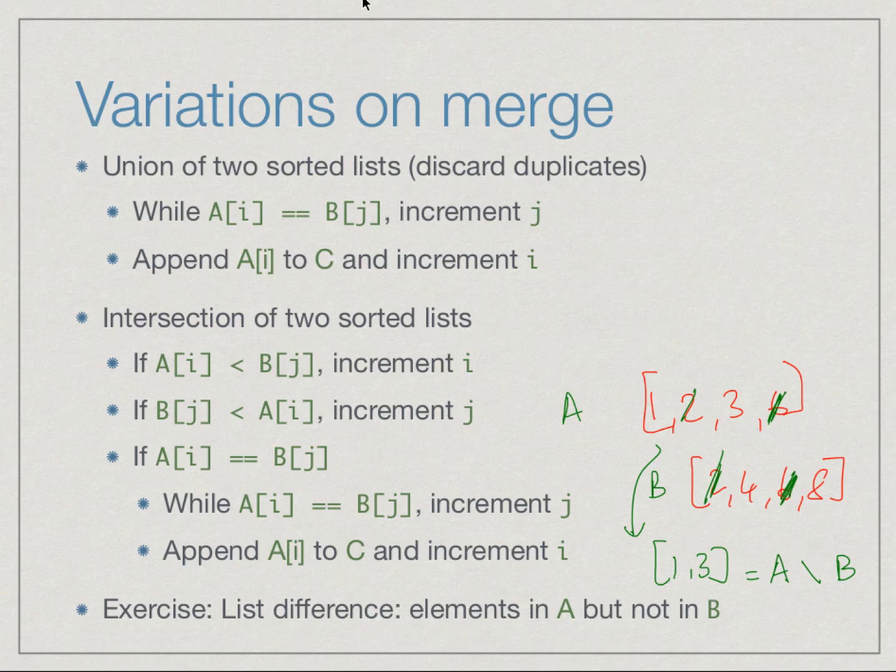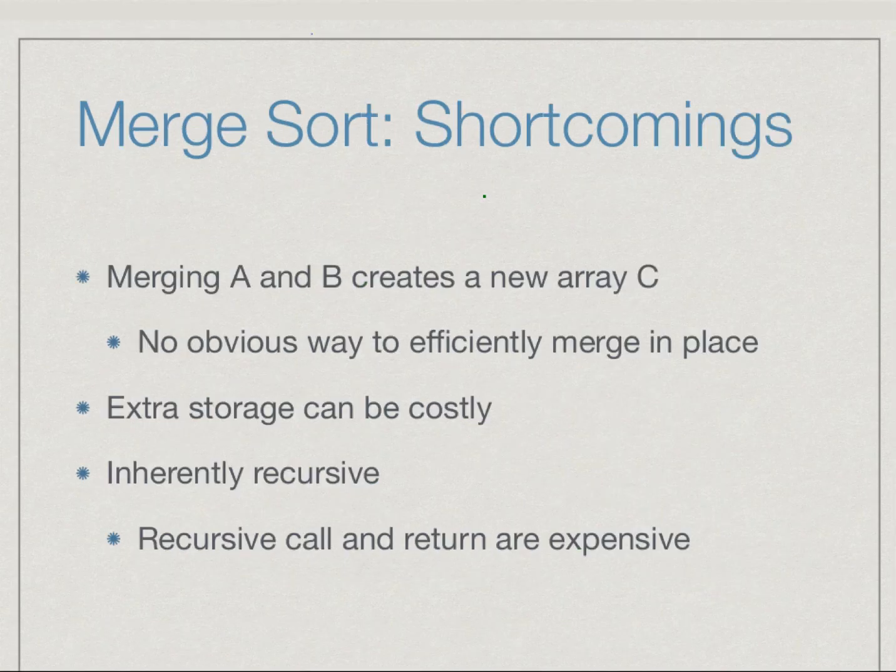See if you can write a version of merge which gives you all the elements in A which are not also in B. Merge sort is clearly superior to insertion sort and selection sort because it is order n log n and can handle lists of size hundred thousand as opposed to a few thousand.